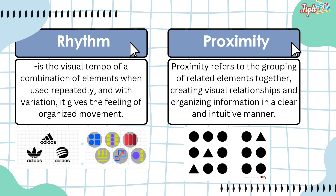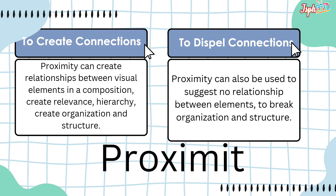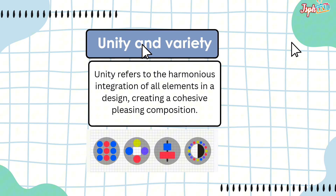Rhythm is the visual tempo of a combination of elements; when used repeatedly and with variation, it gives the feeling of organized movement. Proximity refers to the grouping of related elements together, creating visual relationships and organizing information in a clear and intuitive manner. Proximity can create relationships between visual elements, creating relevance, hierarchy, organization, and structure — or be used to suggest no relationship between elements, breaking organization and structure. Unity and variety refer to the harmonious integration of all elements in a design, creating a cohesive, playful composition.